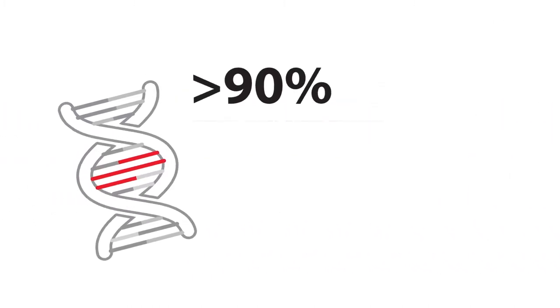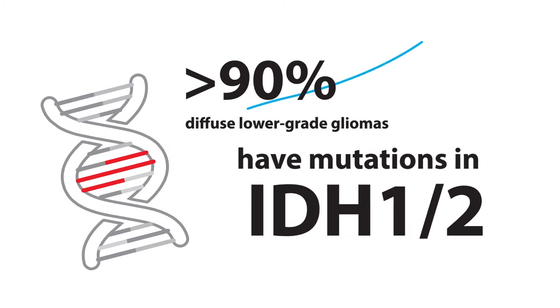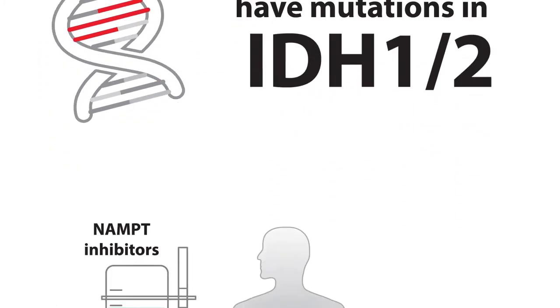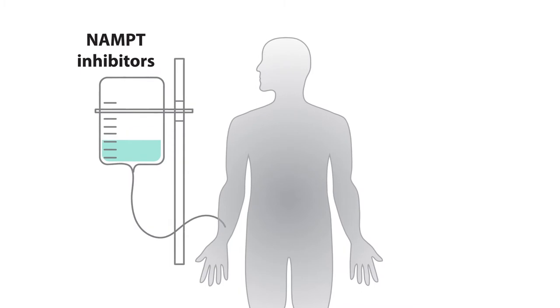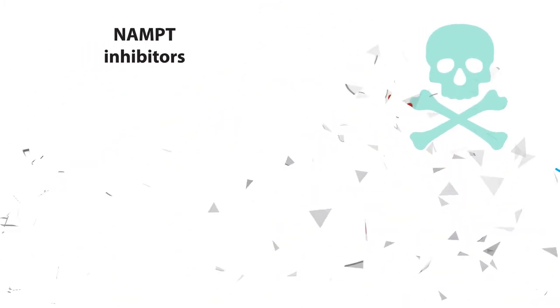More than 90% of adult-diffuse lower-grade gliomas have mutations in genes called IDH1 and IDH2. Unfortunately, the treatment that works best on these tumors is toxic to the kidneys and the retina, so it cannot be used systemically.